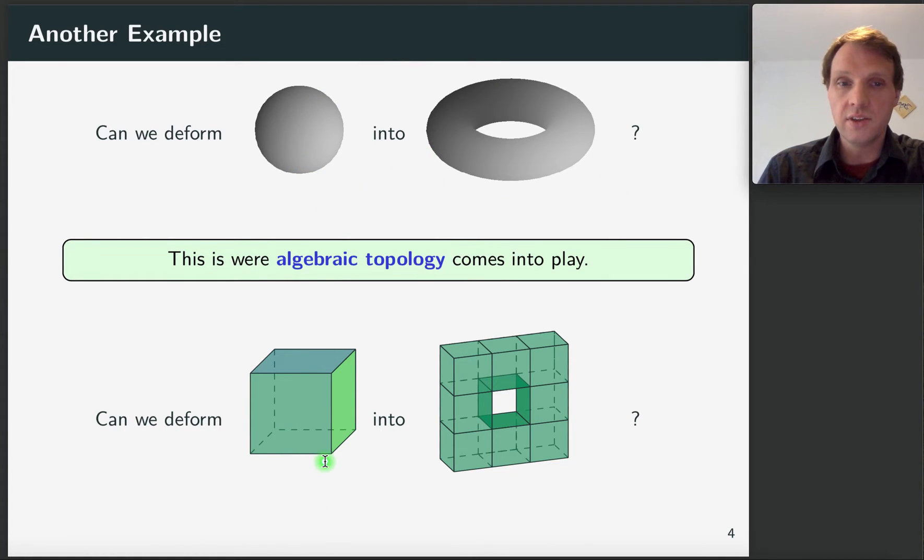So what makes this question easier than this one here? These shapes are made out of vertices, edges and faces. And that's something that we can count, right? So that brings us back to numbers. So let's do that.